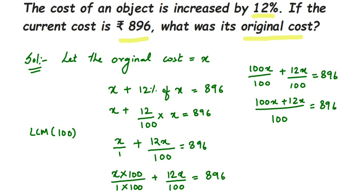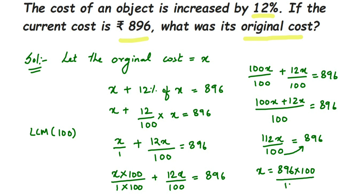Adding the numerator gives us 112x/100 equals 896. Now I want only the value of x on the left-hand side, so I'm going to transpose. 100 is in the denominator, so when transposed it comes to multiplication on the other side. 112 is in multiplication, so when transposed it comes to division. So x equals 896 multiplied by 100, divided by 112.